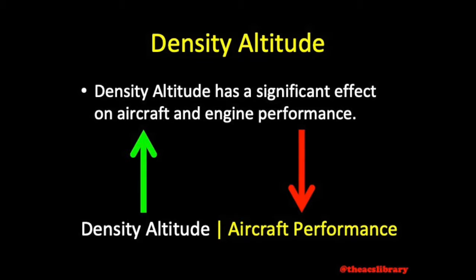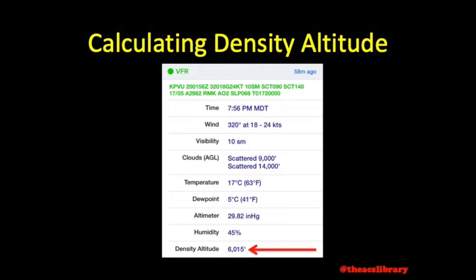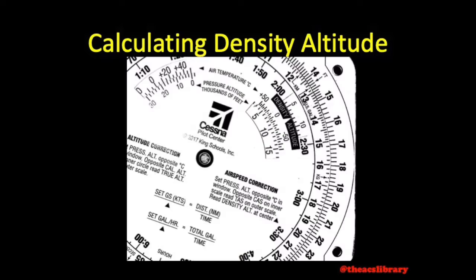There are a few ways to calculate density altitude. The easiest way would be to view density altitude listed on the ForeFlight application's decoded METAR report, or to listen to it via ATIS if it's reported. If that option is not available to you, you may calculate density altitude using your E6B, following along with the steps provided.